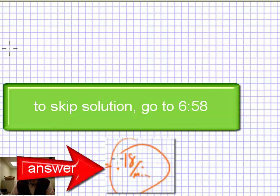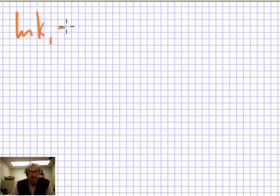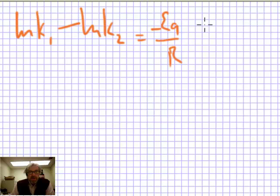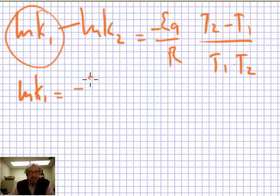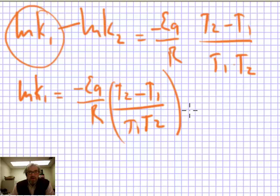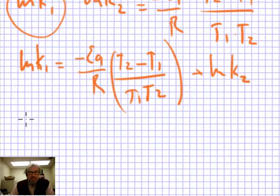We solve this using the Arrhenius equation: ln(K1) minus ln(K2) equals negative Ea over R, times (T2 minus T1) over (T1 times T2). We're solving for K1, so: ln(K1) equals negative Ea over R times (T2 minus T1) / (T1 × T2), plus ln(K2).